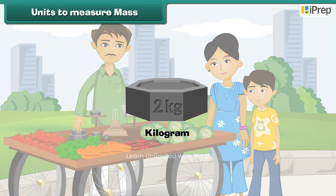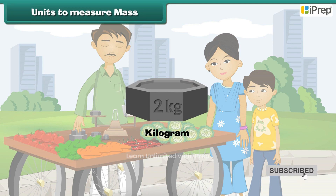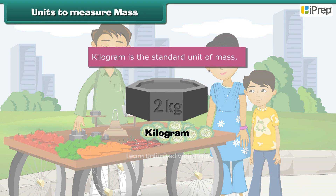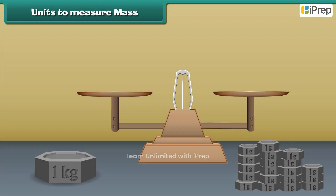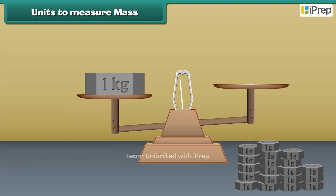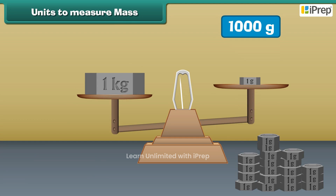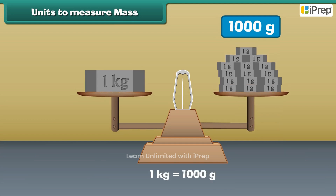Kilograms and grams are the two units used for measuring mass of substances, among which kilogram is the standard unit of mass. If 1 kilogram is divided into 1000 parts, then 1 part is called a gram. This means 1 kilogram is equal to 1000 grams.